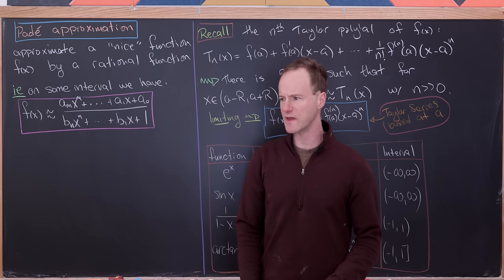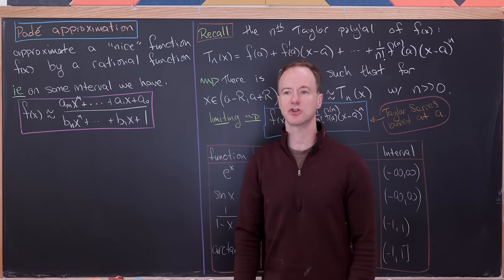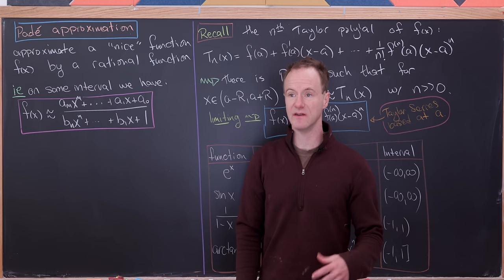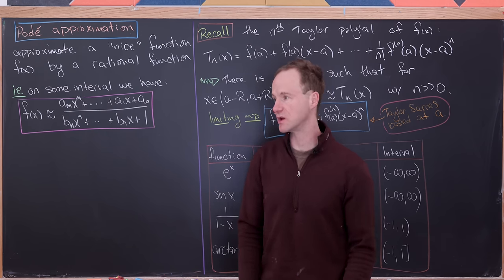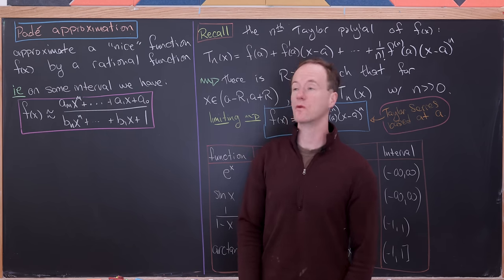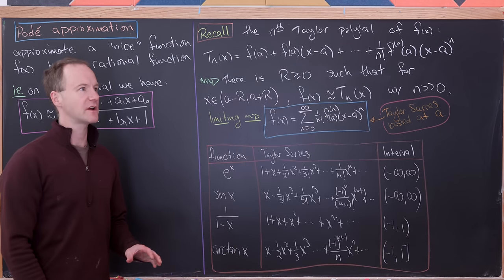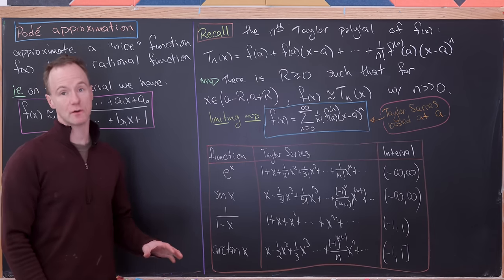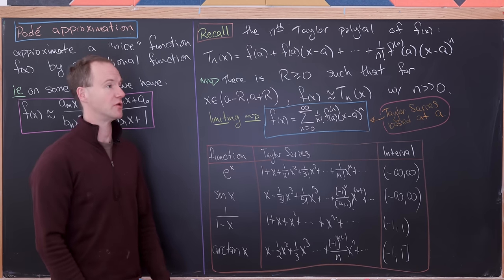Today I want to talk about a certain way that we can take any nice function and approximate it via a rational function — that is, a ratio of two polynomials. But before we look at that, I'd like to look at a more well-known way to approximate functions via polynomials.